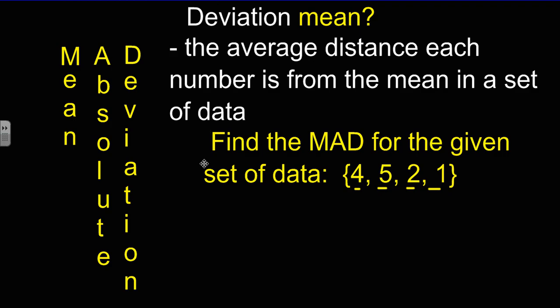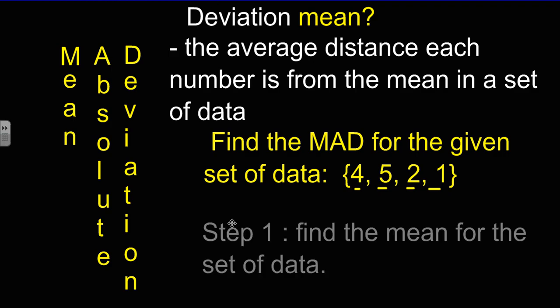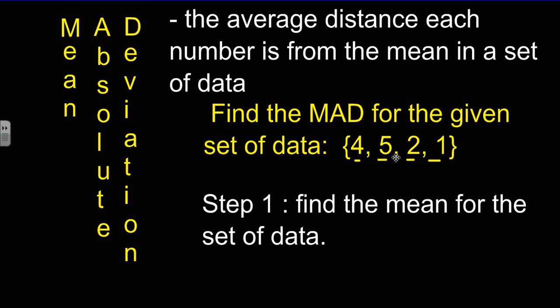The first step that we need to follow is to find the mean for the set of data. So we're going to add these values in the set together. Once we find the sum, 4 plus 5 is 9, plus 2 is 11, plus 1 is 12.